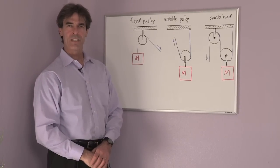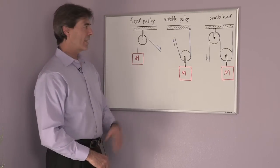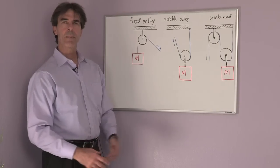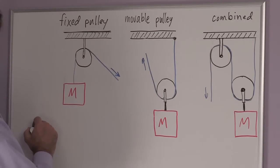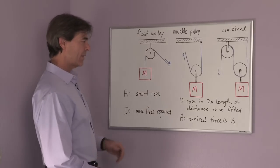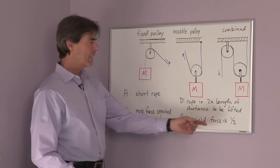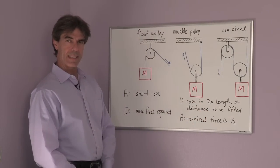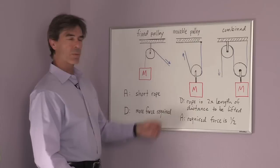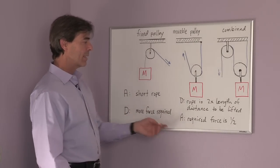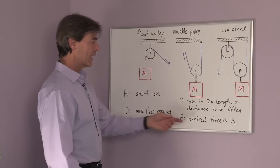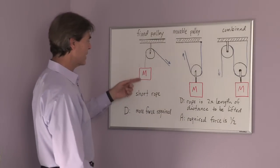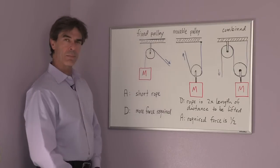Now, what are the advantages and disadvantages of the movable pulley as compared to the fixed pulley? In the case of a movable pulley, the rope that is required to lift up a distance d is twice that distance d. In other words, you need twice as much rope. But this also means that the force that you need to lift the object is one half the force necessary for the fixed pulley case.